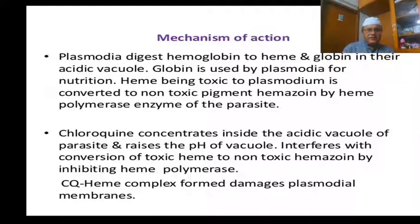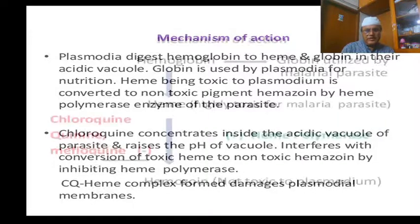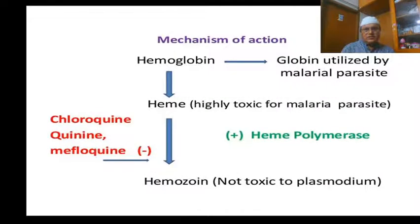Chloroquine inhibits the heme polymerase, thereby causing toxic heme to accumulate rather than converting to non-toxic hemozoin. Toxic heme affects the parasite. Chloroquine and toxic heme form a complex and damage the plasmodium, thereby killing the malarial parasite.